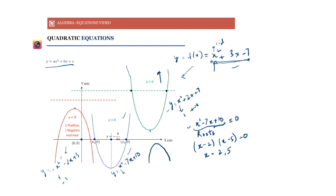For x = 2 and x = 5, the value of the polynomial is 0. These roots are represented on the xy-axis as the points (2, 0) and (5, 0). These are the points where the parabola cuts the x-axis. The roots lie on the x-axis because y = 0 at those values of x.